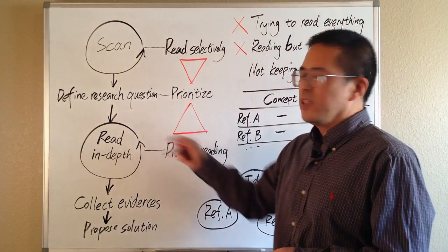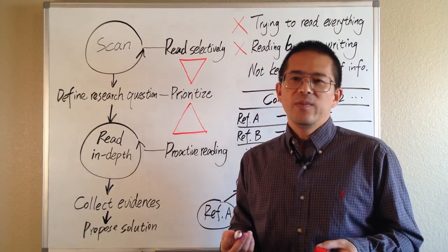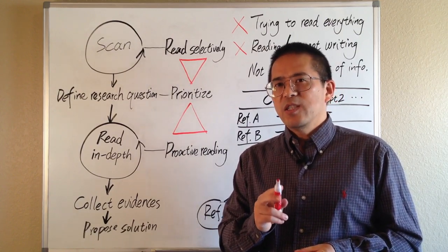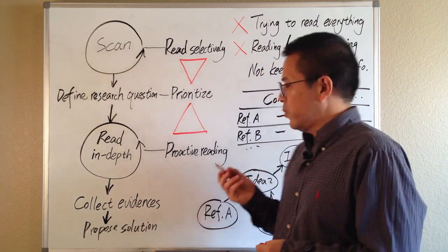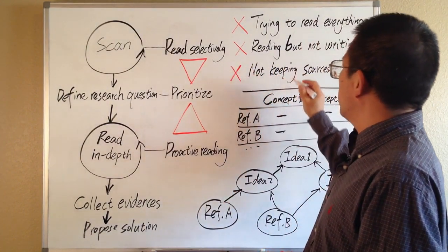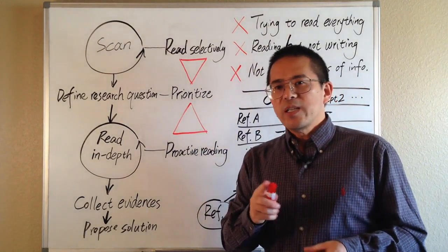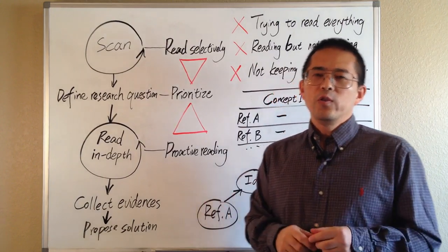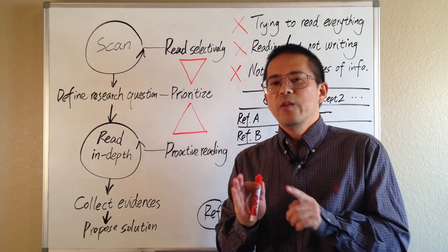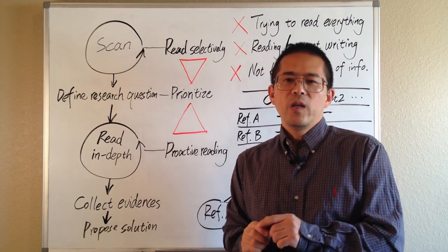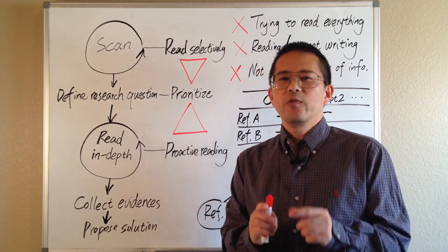The second trap is reading but not writing, especially in the second cycle. It is always a good practice to start taking notes earlier — you do not want to wait until the last minute to start writing. The third trap is not keeping track of the source of information. Whenever you write down something that may be useful for your review, you should always put the reference there. It will save you a lot of time when it is time to write your review, as you do not want to waste time identifying the correct reference for information you want to cite.